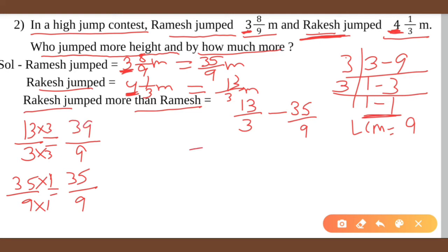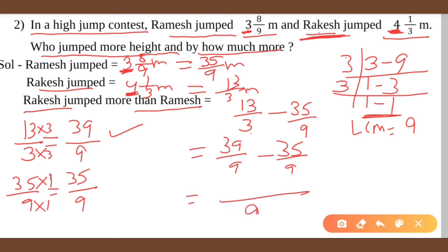So 13 upon 3 becomes 39 upon 9, and 35 by 9 stays as 35 by 9. Now both have denominator 9. We calculate 39 minus 35, and you get 4 by 9.